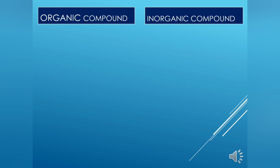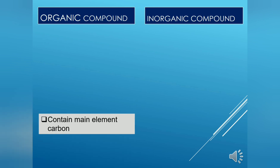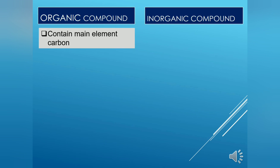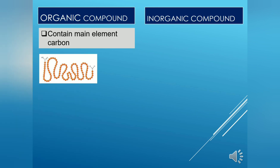Organic compound is a result of activities from living things, but it can also be synthesized in the lab. Over time, organic compounds contain carbon as a main element, and in general the structure of organic compound is larger and more complex than inorganic compound — for example, protein and benzene.